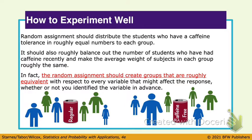Meaning, a little bit of every type of person is getting each treatment — girls, boys, caffeine tolerant, people who don't ever drink caffeine, people who are young, old, overweight, not overweight, healthy, not healthy, active, not active. All the different people are in both groups.